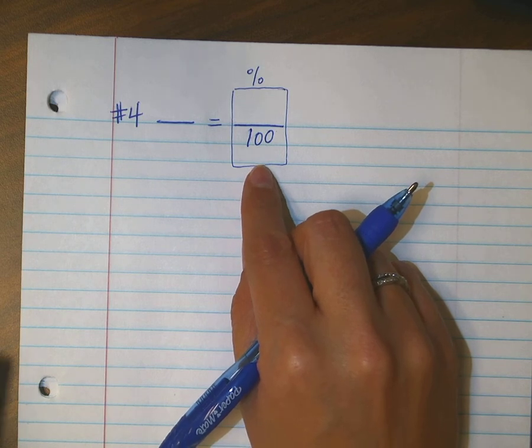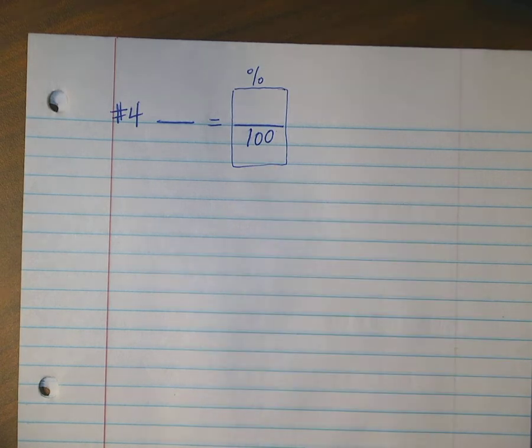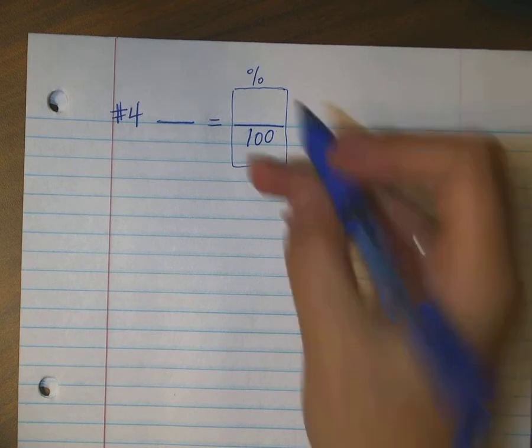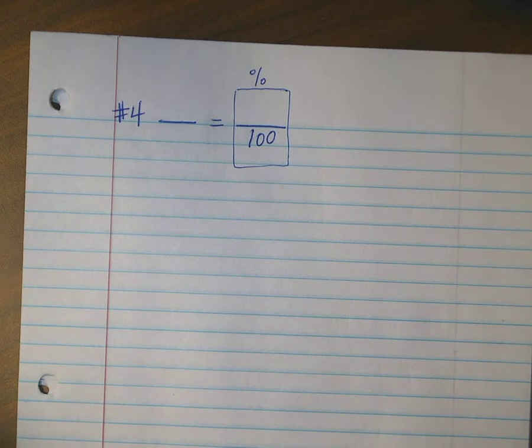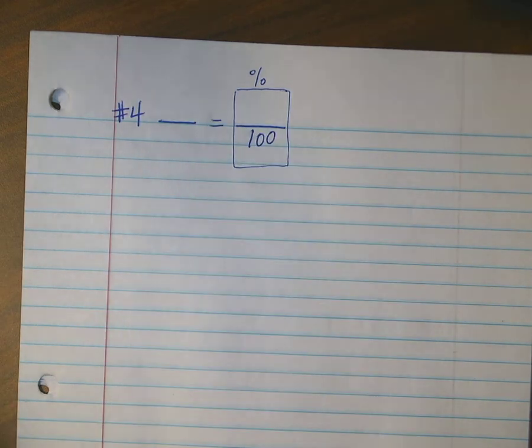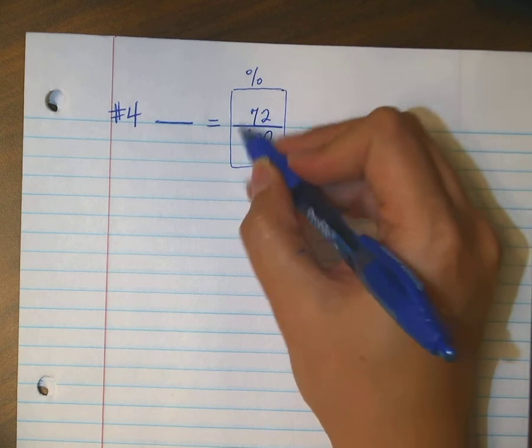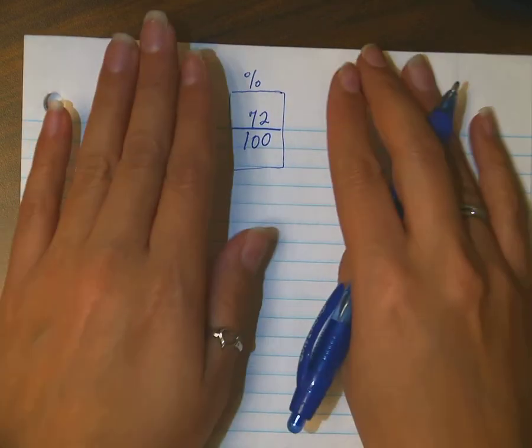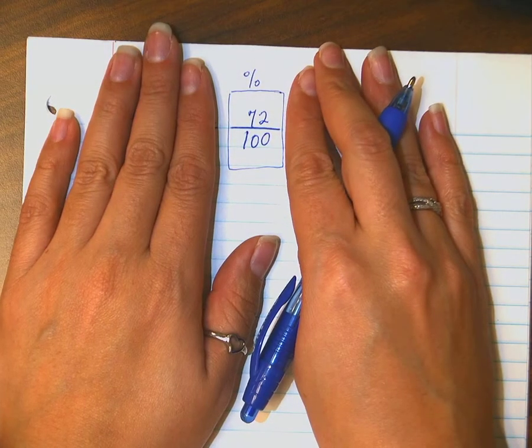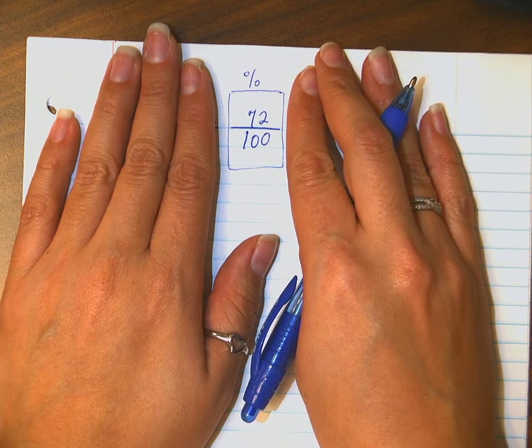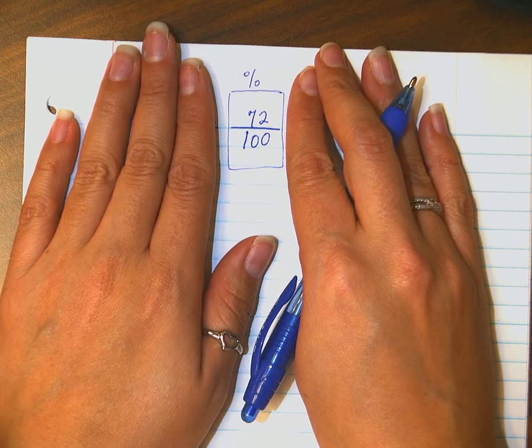Then I read my question again, it says 18 is 72% of what number? So my question, do I have a percent to use here? Yes, what is it? Thank you. And again, this is my percent information. In fact, look at that fraction, 72 out of 100. That's exactly the same answer as 72%.